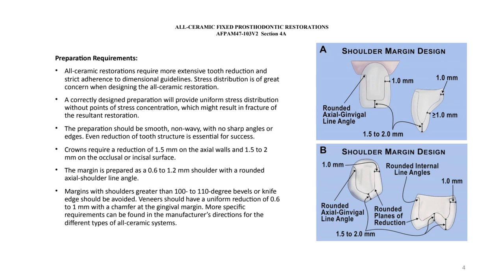The margin is prepared as a 0.5 to 0.6 to 1.0 mm shoulder with a rounded axial shoulder line angle. A wider shoulder margin allows the margin of the restoration to be stronger. Margins with angles greater than 100 to 110 degrees — bevels or knife edges — should not be used on this type of restoration. Veneers should have a uniform reduction of 0.6 to 1 mm with a chamfer at the gingival margin.